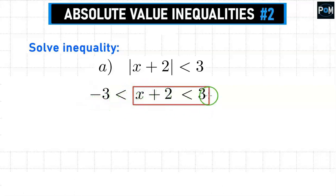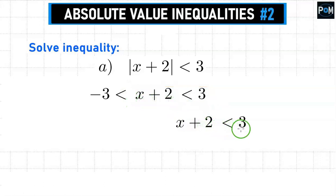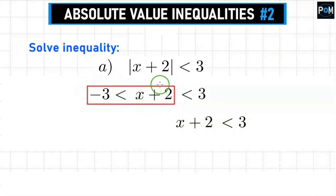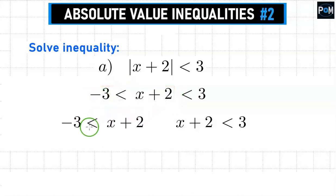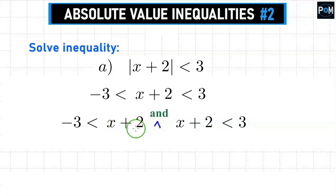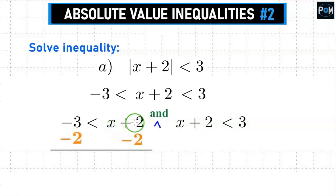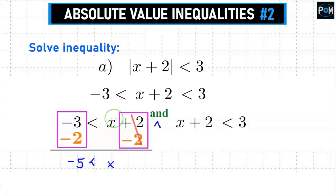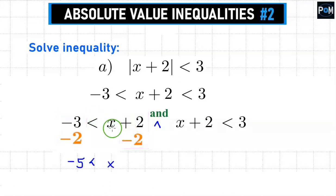The first inequality is x plus 2 is less than 3. The second part is negative 3 is less than x plus 2. Both these inequalities need to be satisfied, so we put the symbol 'and.' We solve it by subtracting 2 from both sides. Negative 3 and negative 2 give me negative 5. It's less than x — those 2's cancel each other out.